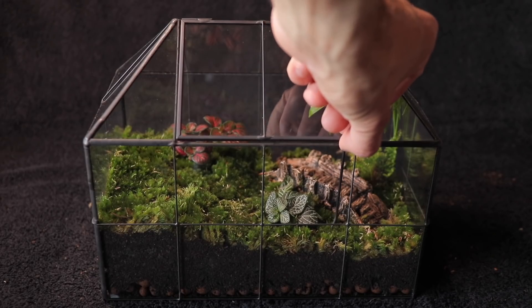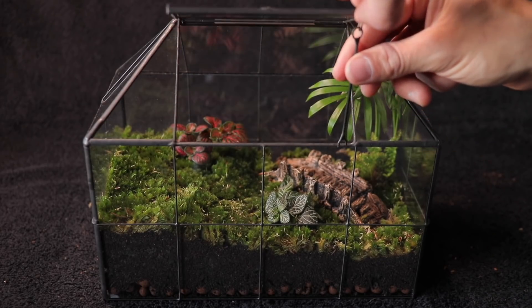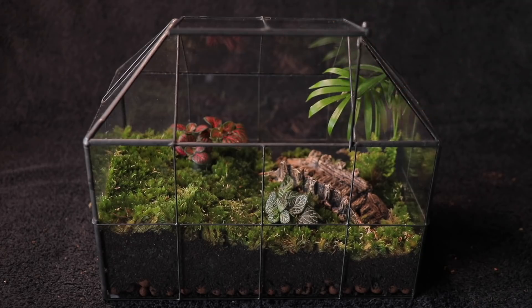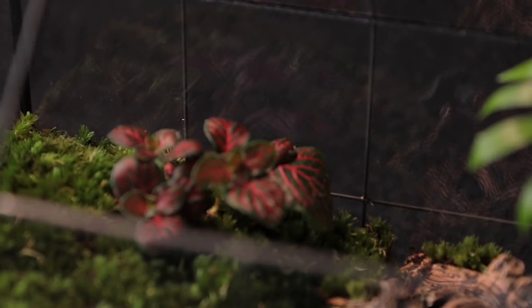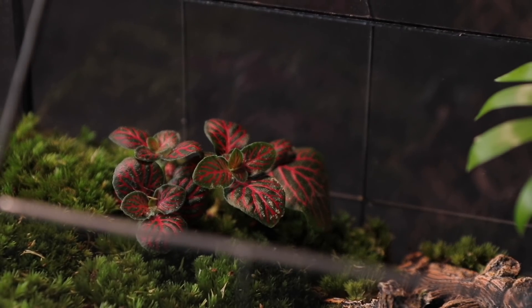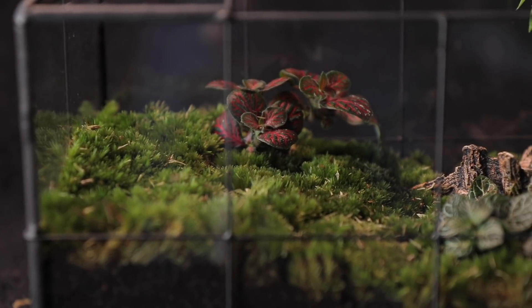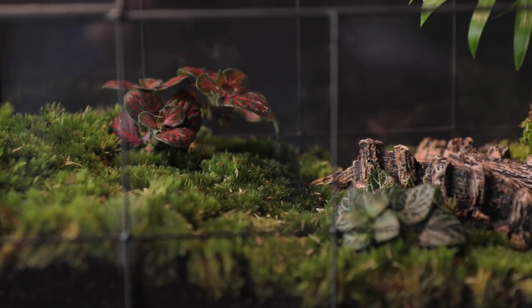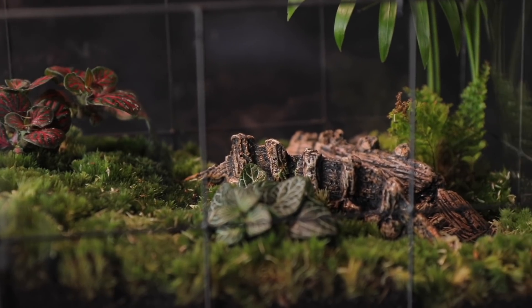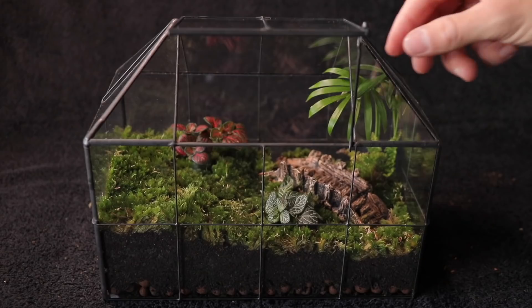A terrarium is essentially a glass container that usually contains soil and plants. The incredible thing about terrariums is that once you have made one, they need very little maintenance in the future. There are generally two types of terrarium. An open terrarium, where there is always a gap in the glass for air to flow. And a closed terrarium, where the glass is sealed shut with a lid or a door.